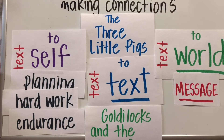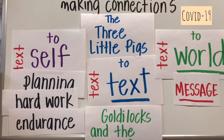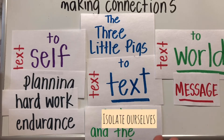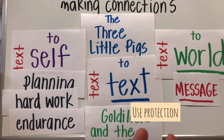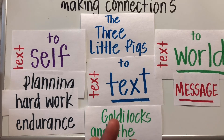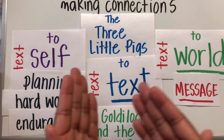I can compare something that's happening around the world — a current event — that relates to planning and hard work and how it pays off in the end. For example, during this time we have the virus called COVID-19. We can compare it to The Three Little Pigs. It can be three ways we can respond to this virus: we can isolate ourselves and stay home, or we can go out and protect ourselves with masks and gloves, or we can just not worry about it and go about our lives without worrying about getting infected or infecting others. This is a text-to-world example that we can compare to The Three Little Pigs.